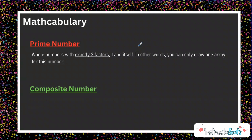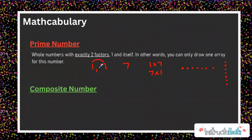An example of a prime number would be 7, because the only factors you can use to multiply and make 7 with whole numbers would be 1 and 7. You could do 7 times 1, but the commutative property tells us that's the same thing. So if you had an array, you could have 1 times 7 this way or 1 times 7 that way, but it's still the same array — same dimensions. In your factor rainbow, there are only going to be two numbers: 1 and itself. So 7 is an example of a prime number.